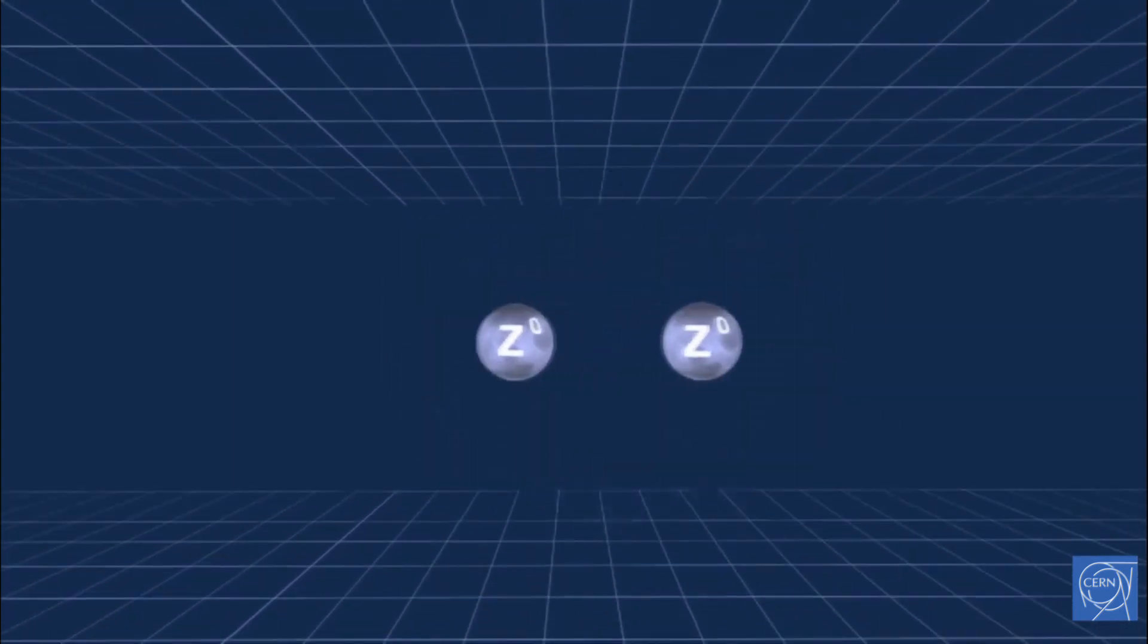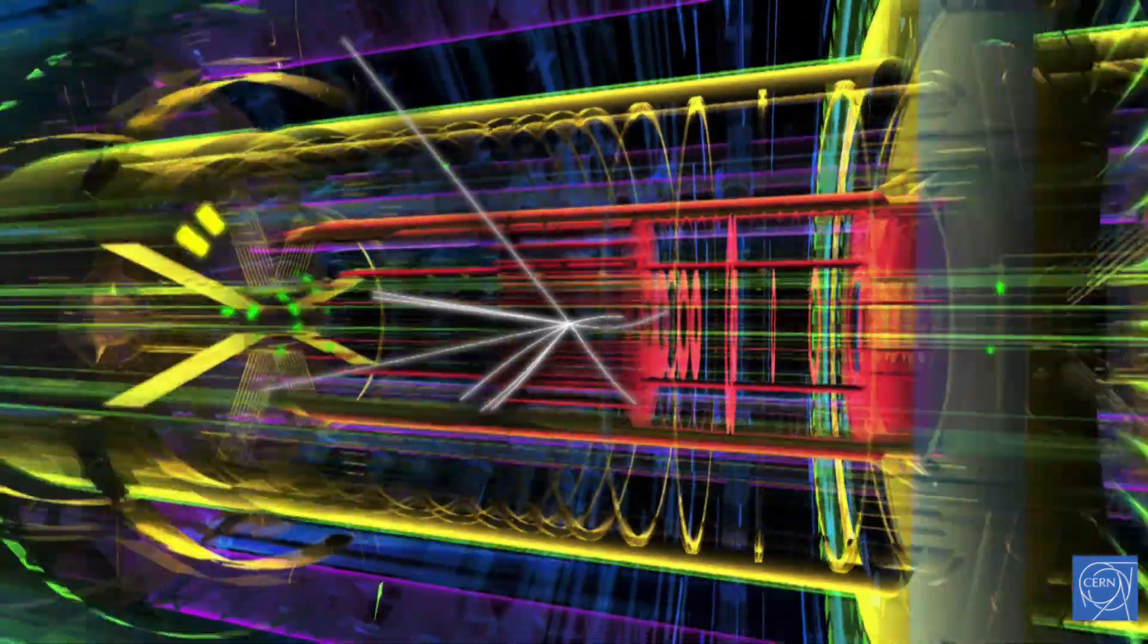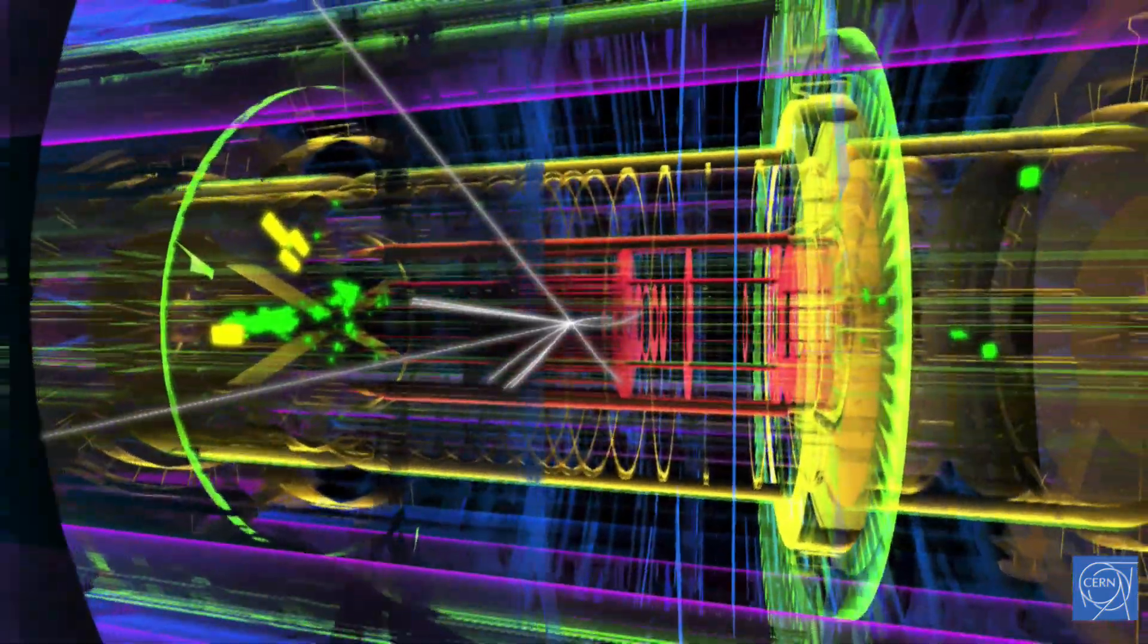When these new particles decay, we have to move back out to describe what's happening at longer distance scales. Here, quarks and gluons are observed as sprays of radiation called jets.